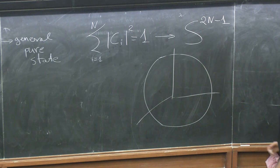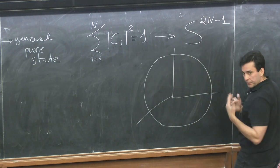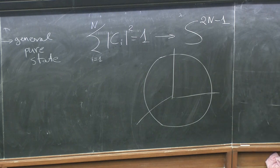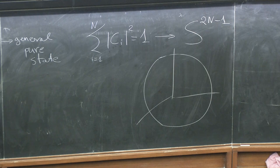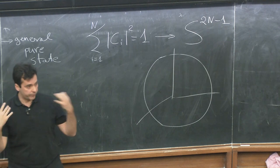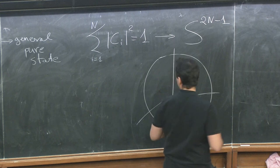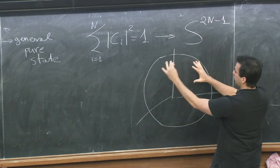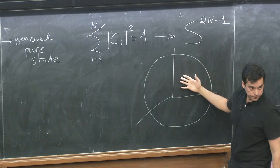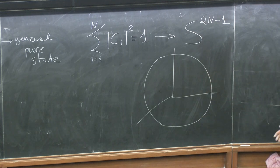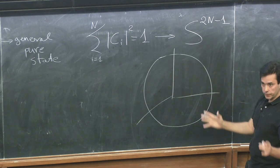We have this very large sphere — dimensionality 2N−1 — and every point on the sphere represents one particular pure state. For a fixed observable A, computing its expectation value on different pure states defines a function on this sphere. We want to know whether this function fluctuates a lot as you move on the sphere, or whether it stays more or less constant.